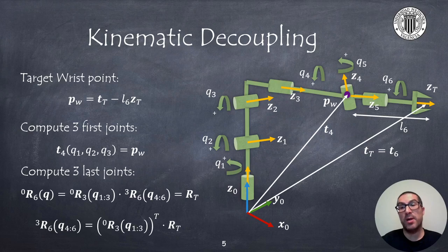Once these three values are known, then we can compute the orientation of the end effector by computing the rotation matrix between the end effector and the reference frame 3.